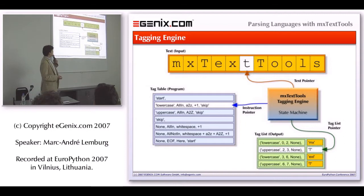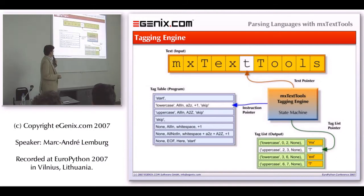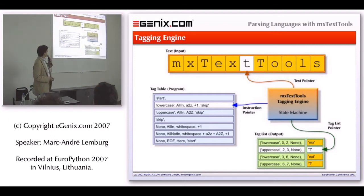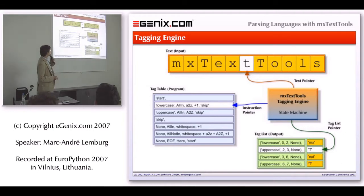At the heart of the tagging engine is the state machine. It's implemented as a very tight C loop and uses a C switch statement, so it basically works like a virtual machine — like a bytecode virtual machine, like the one you have with Python — and it's highly optimized, so it's very fast. You program the state machine much like you would program assembler. That's the not-so-elegant part. But while you can write a program as a simple list of tuples and pass it to a Python function, so you don't have to deal with all the assembler stuff, it is still a bit difficult to write these things.